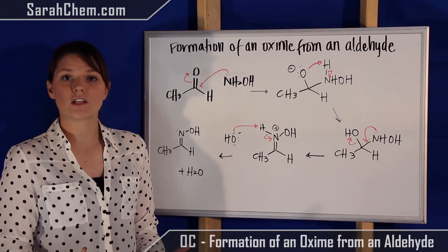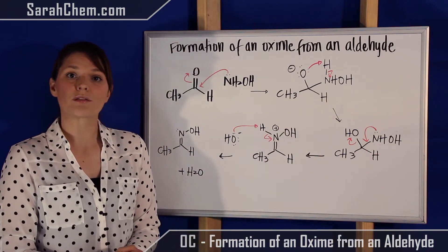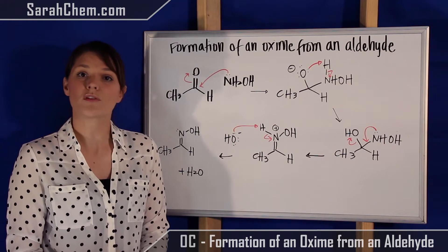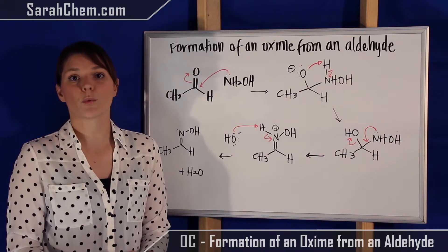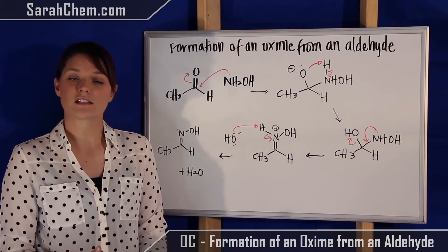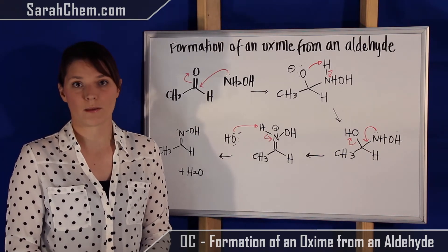Now, whenever you've got a tetrahedral intermediate, which is what this is, where a carbon is sp3 hybridized, because this carbon here is attached to more than one electronegative group, we're going to know that that's not a very stable compound, and we're ultimately going to have to continue the reaction until we're able to get it back down to an sp2 hybrid.